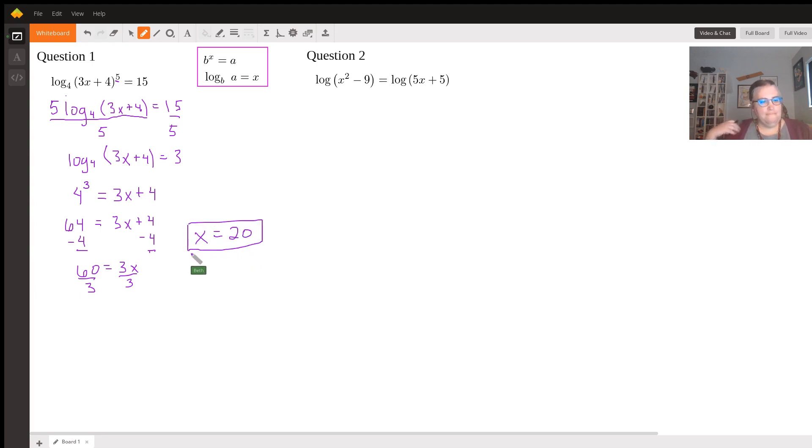Okay. Now, this other one. We can do some logarithmic math to figure this out. But what basically has to happen is they have the same base and are set equivalent to each other. So the only way this can be true is if what we're taking logarithm of are equal to each other. So we have x squared minus 9 equals 5x plus 5.